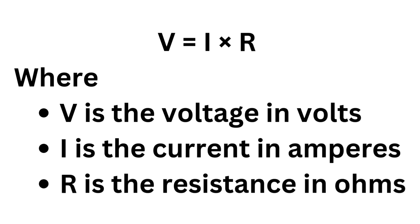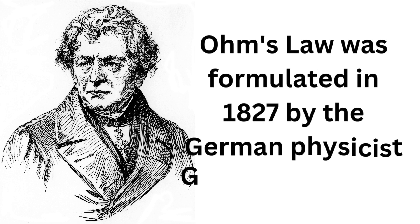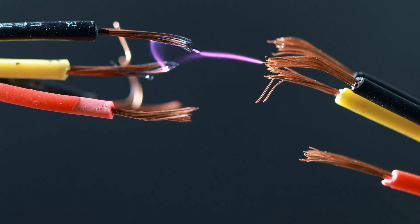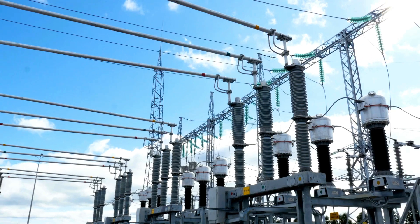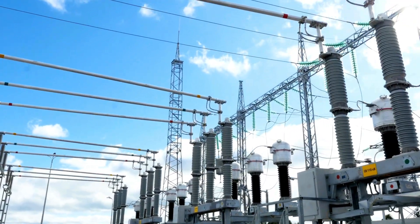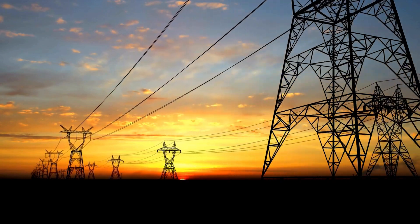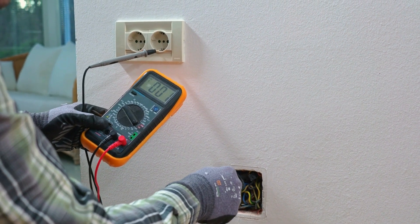Ohm's Law was formulated in 1827 by the German physicist Georg Simon Ohm. His groundbreaking work, Die Galvanische Kette Mathematisch Bearbeitet (The Galvanic Circuit Investigated Mathematically), laid the foundation for understanding electrical circuits. Ohm conducted numerous experiments with electrical circuits using simple devices like batteries and resistors, carefully measuring current while varying voltage and resistance. His meticulous work led him to derive the relationship we now know as Ohm's Law.